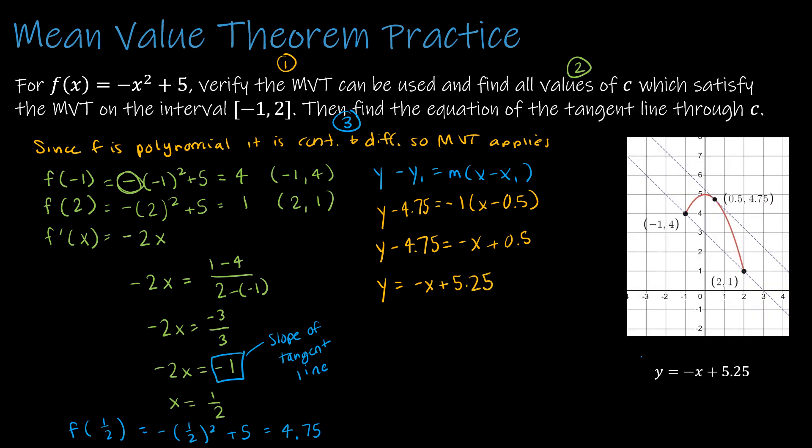The original function was y equals negative x squared plus 5. The slope of the tangent line is negative 1, and the equation of that tangent line is y equals negative x plus 5.25. Up next, we're going to take a look at increasing and decreasing functions and how the derivative can help us with that.